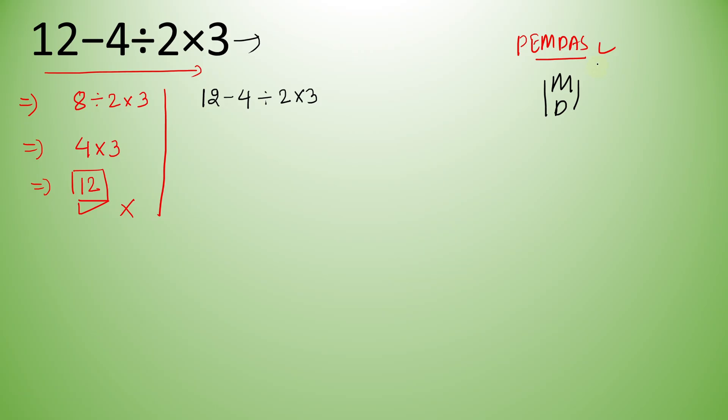Subtraction has the lowest priority, so we will operate the subtraction part last. Out of multiplication and division, we have to operate left to right.